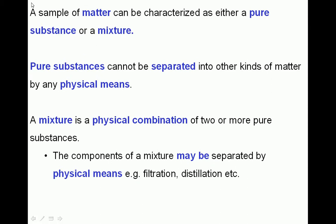We can classify matter according not only to its properties, but according to whether it is a pure substance or a mixture. Pure substances are those that cannot be separated into different kinds of matter by any physical means — it doesn't matter how we cut it, distill it, filter it, or sort through it. The reason is that in a pure substance, there is only one kind of matter present.